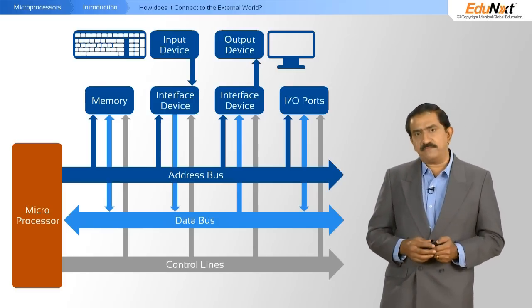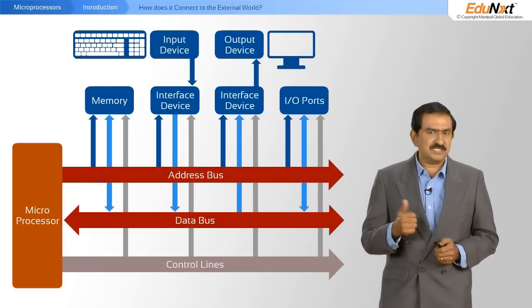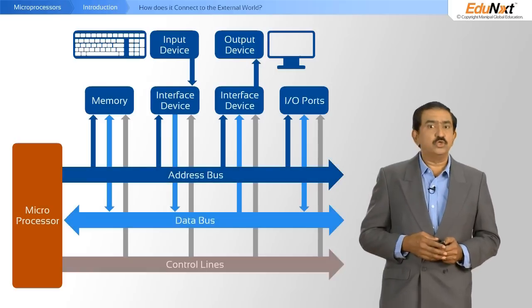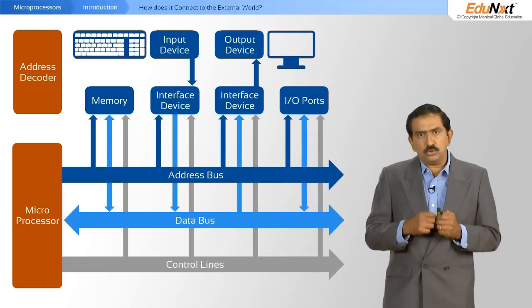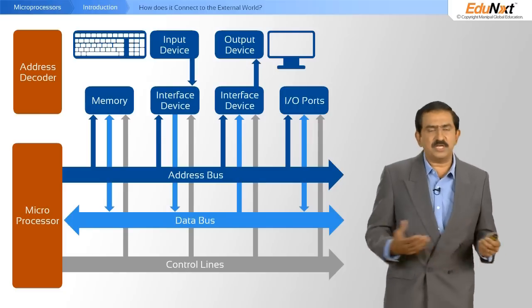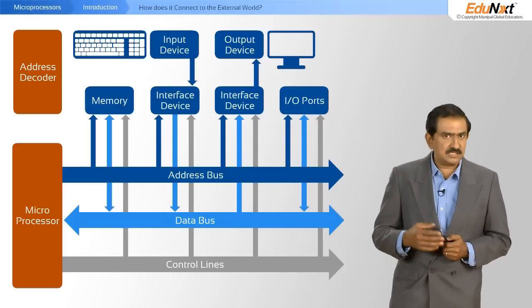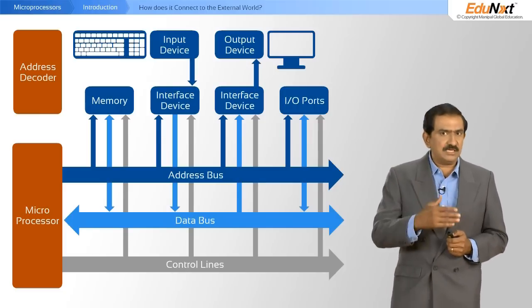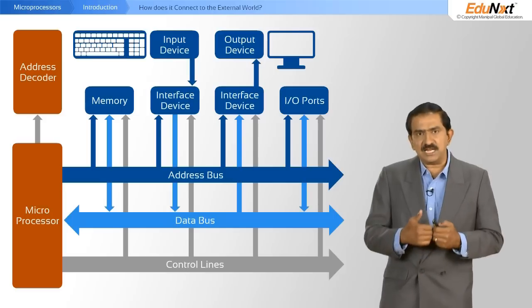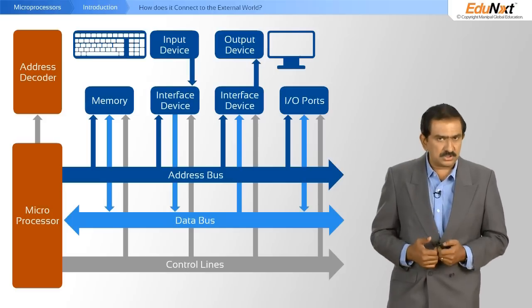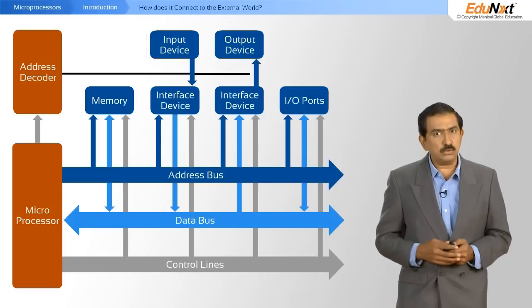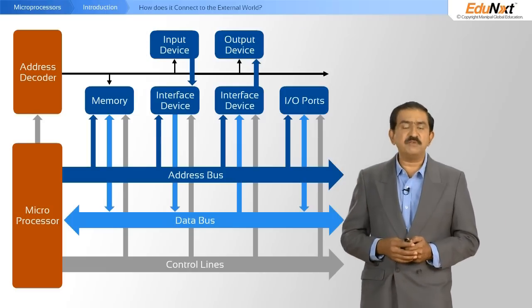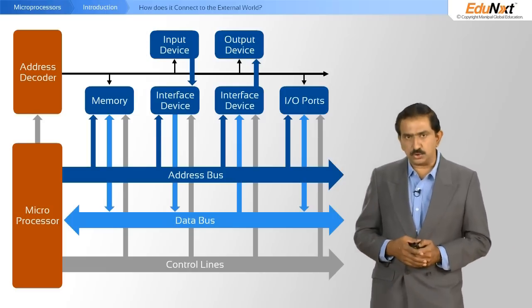This in itself is not enough. So while you have the address bus and the data bus connected to this, you need to have something called an address decoder. How does the processor know that it is the keyboard or the display that it is talking to? The address decoder helps you do that. The address decoder takes address lines from the processor, takes read signals and write signals from the processor, decodes it accordingly, and triggers the various peripheral devices that you have connected to it.